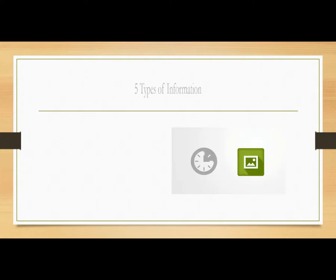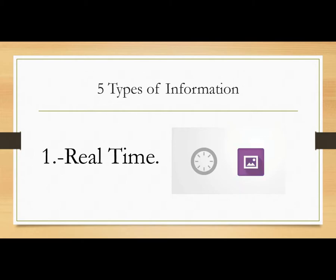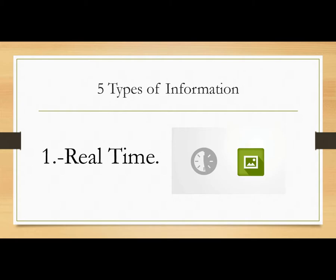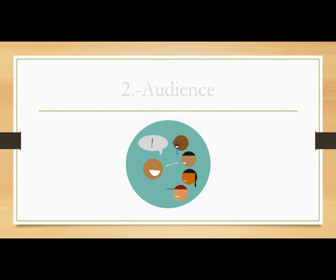I will explain five of the types of information that you can get from Google Analytics. The first one will be Real Time, and what it is — as the title states — it actually helps you to know how many visitors you have in real time whenever you are watching the report.